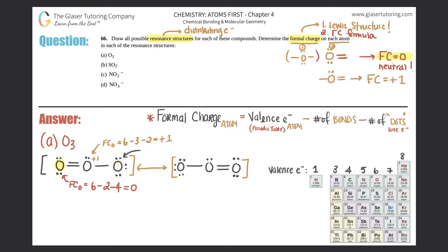The last oxygen has a single bond. Formal charge = 6 (valence) minus 1 (bond) minus 6 (dots) = negative one. So this oxygen has a formal charge of −1. Any oxygen with only one bond and three lone pairs (six lone electrons) will always have a formal charge of −1.